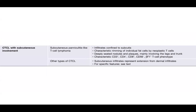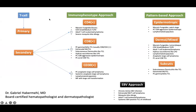For CTCL with subcutaneous involvement: subcutaneous panniculitis-like T-cell lymphoma consists of infiltrates confined to the subcutis with characteristic rimming of individual fat cells by neoplastic T-cells, deeply seated nodules and plaques mainly involving the legs and trunk. Characteristic immunophenotype is CD3-positive, CD4-negative, CD8-positive, CD56-negative, and beta-F1 T-cell receptor-positive. There are other types of CTCL that can involve the subcutaneous infiltrates.